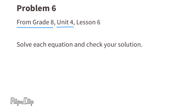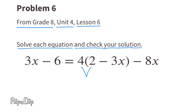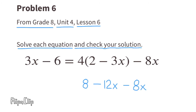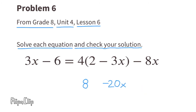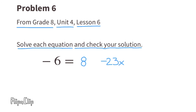Problem number 6, from 8th grade Unit 4 Lesson 6. Solve each equation and check your solution. Use the distributive property: 4 times 2 is 8, and 4 times negative 3X is negative 12X. Bring down the negative 8X and combine like terms: negative 12X and negative 8X combine to negative 20X. Subtract 3X from both sides, giving negative 23X on the right. Subtract 8 from both sides: negative 6 minus 8 equals negative 14 on the left.